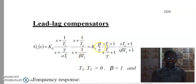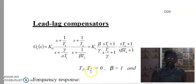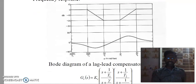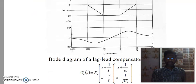Simplifying this, you will write it as Kc beta times S T1 plus 1, divided by gamma S T1 by gamma plus 1, into S T2 plus 1, divided by S beta T2 plus 1. T1 and T2 are greater than 0, beta is greater than 0, and gamma is greater than 0. The Bode diagram of the lag-lead compensator is Gc of S equal to Kc into S plus T1, divided by S plus gamma T1, into S plus T2, divided by S plus 1 plus beta T2.